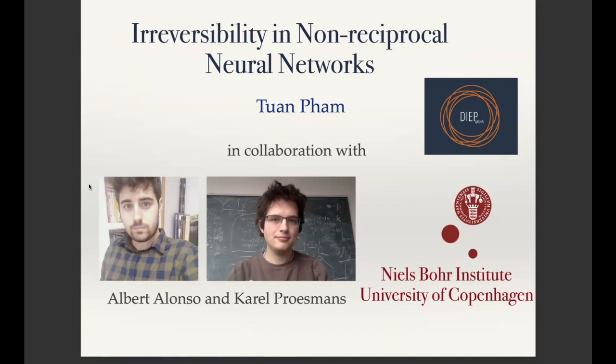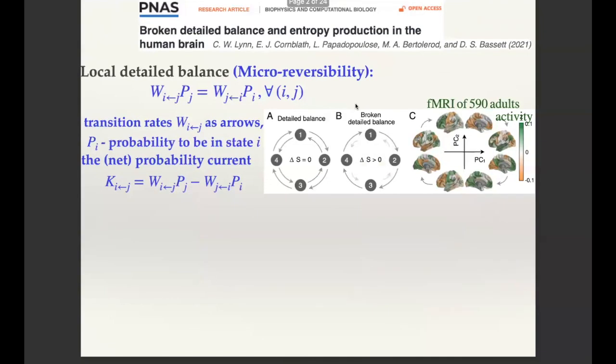This work has been done in collaboration with my collaborator at the Niels Bohr Institute, University of Copenhagen. Let me start with the motivation and introduction. There is one recent work on something called broken detailed balance and entropy production in the human brain, done by a group of people at Princeton. They have an fMRI dataset for about 590 adults, and they record the state of the brain and project it into two PCA components.